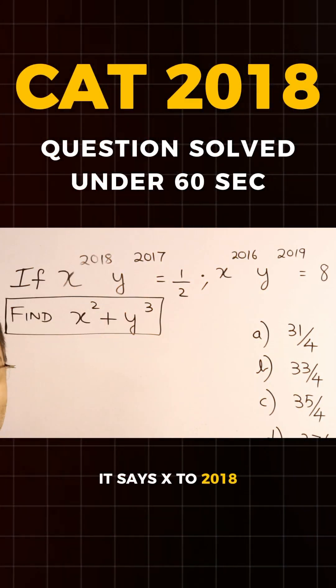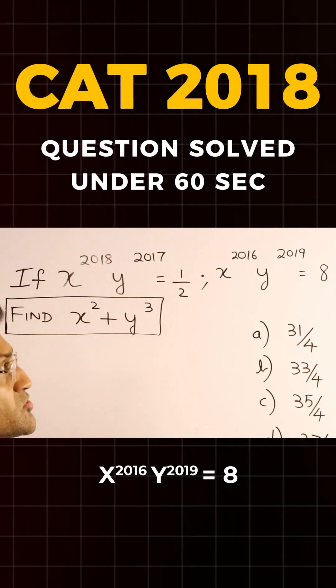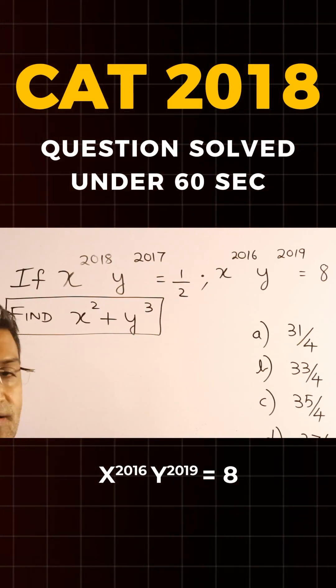It says x raised to 2018, y raised to 2017 is half, and x raised to 2016 times y raised to 2019 is 8.